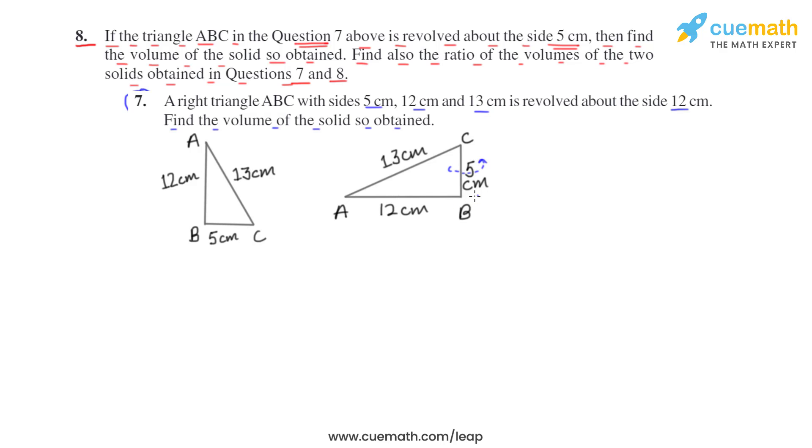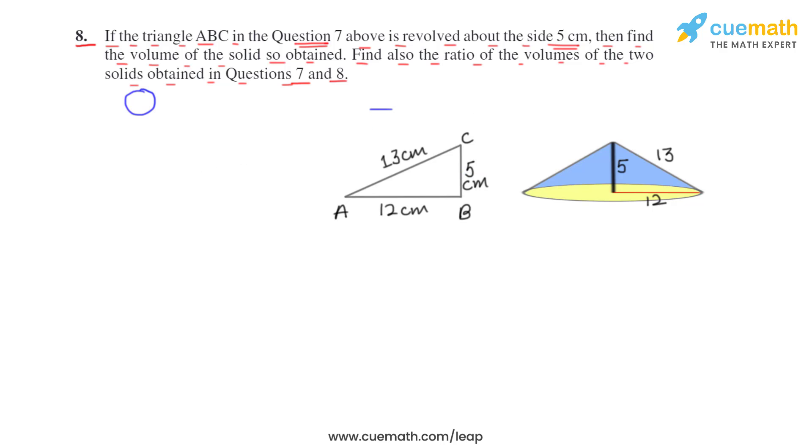It will be revolved like this, and the 12 centimeter side will come to the right side also. The 12 centimeter sides will become the radius, so the radius will be 12 centimeters this time and height will be 5 centimeters.